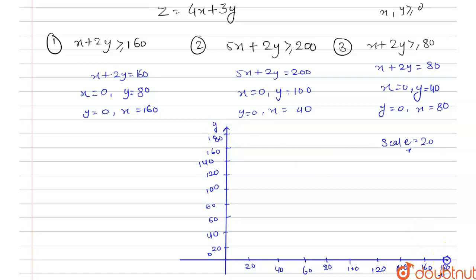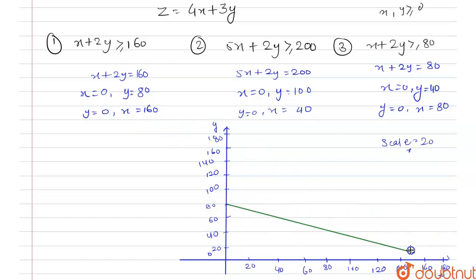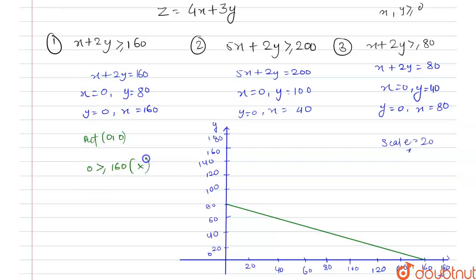Now we plot the curve of x plus 2y ≥ 160. When x equals 0, y equals 80, and when y equals 0, x equals 160. We put the origin (0,0) into the equation and get 0 ≥ 160, which is not possible. So the region for x plus 2y ≥ 160 is the one in which the origin does not lie.